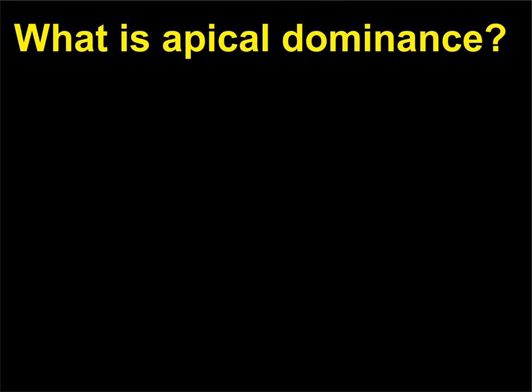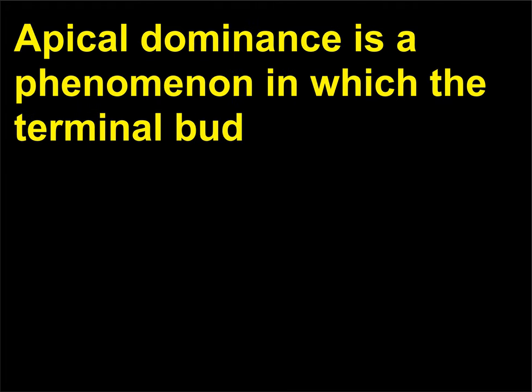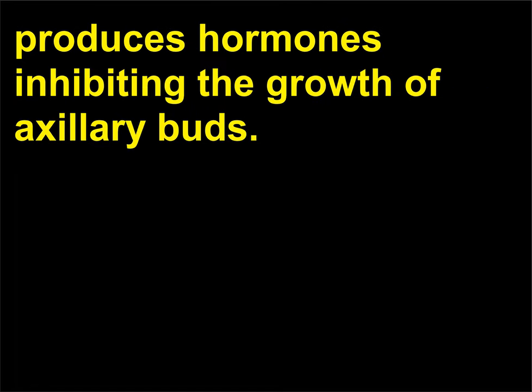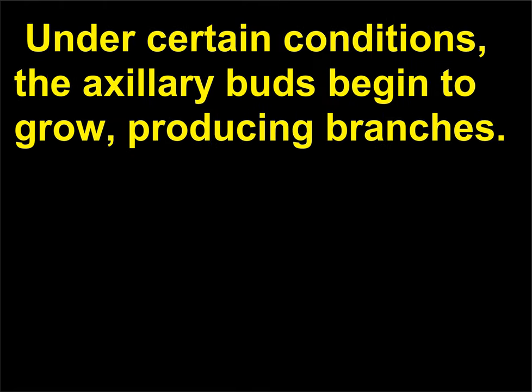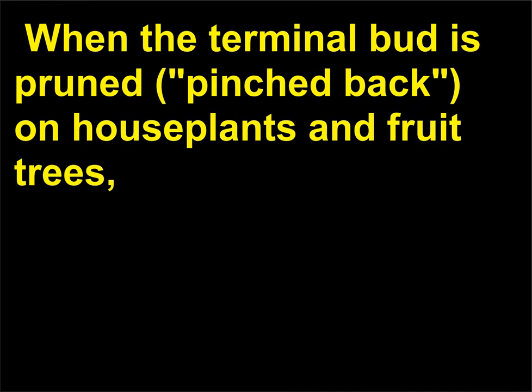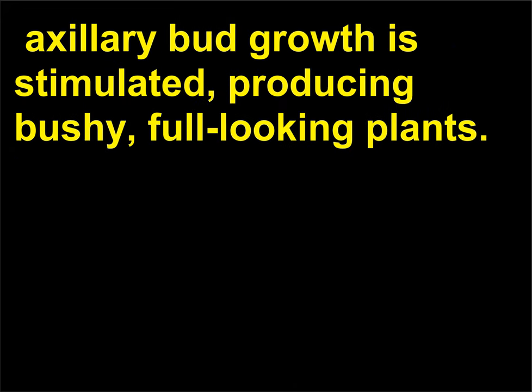What is apical dominance? Apical dominance is a phenomenon in which the terminal bud produces hormones inhibiting the growth of axillary buds. This allows the plant to grow taller, increasing its exposure to light. Under certain conditions, the axillary buds begin to grow, producing branches. When the terminal bud is pruned, or pinched back, on house plants and fruit trees, the axillary bud growth is stimulated, producing bushy, full-looking plants.